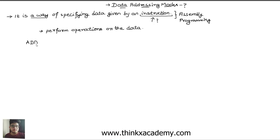Let's look at a very simple microprocessor instruction: the ADD instruction. ADD is a specified built-in keyword used to add the contents of registers or data. Suppose we have two registers, AX and BX — these are general purpose 16-bit registers that can store 16-bit data. ADD is the operator.